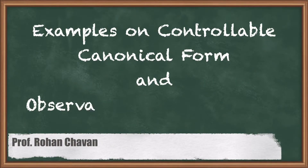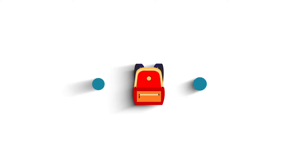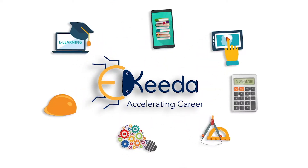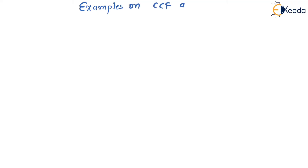Hello friends. In this session we will see some examples on controllable canonical form and observable canonical form. Let's begin. Let us take some examples on controllable canonical form and observable canonical form — everything will become very crystal clear. Let us take the first example.